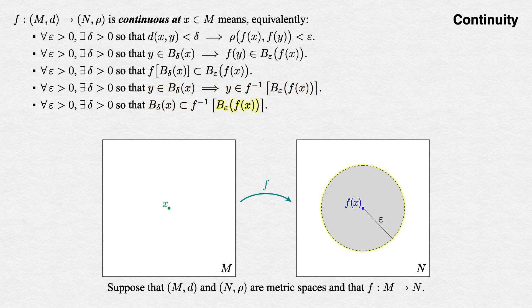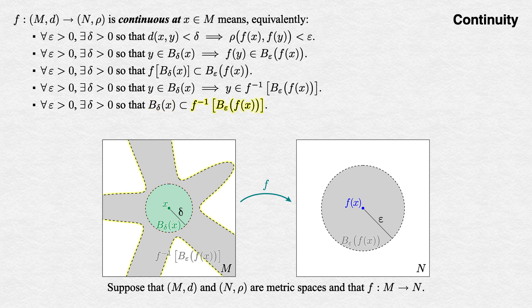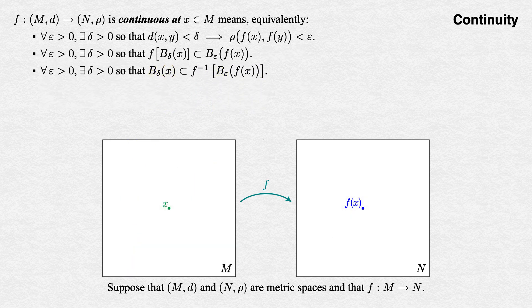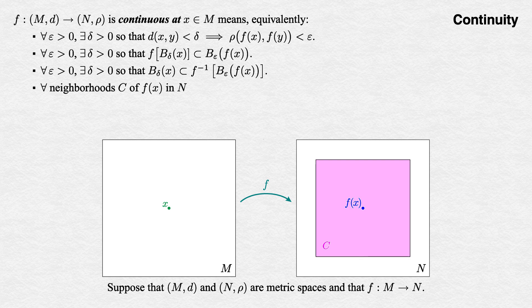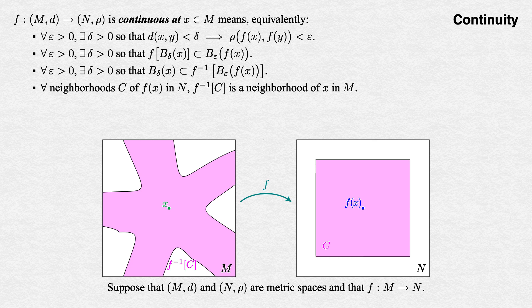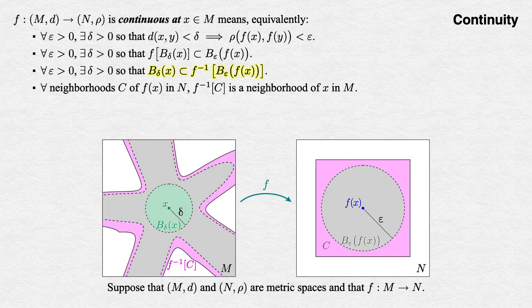So in terms of open balls, for any open ball about f(x) in the codomain, there's an open ball about x contained in its preimage. This last statement about open balls can be quickly rephrased in terms of neighborhoods: for each neighborhood C of f(x) in the codomain, its preimage under f is a neighborhood of x in the domain. To see why this is equivalent: given any neighborhood C of f(x), there must exist some positive epsilon such that B_epsilon(f(x)) is contained in C. By our hypothesis, the preimage of this open ball contains some open ball B_delta(x), and therefore the preimage of C is a neighborhood of x in M.